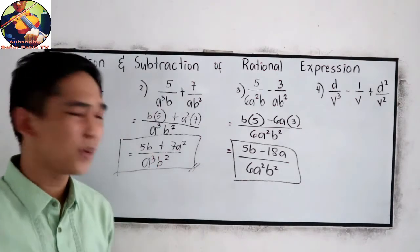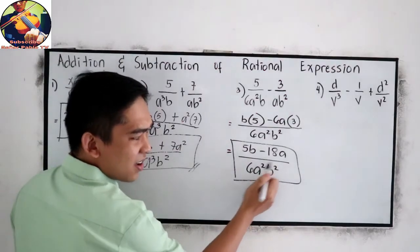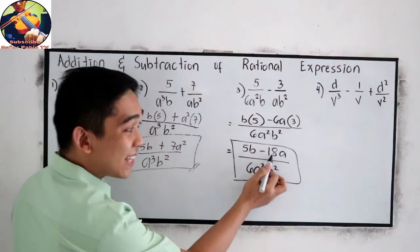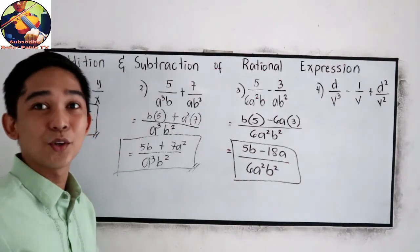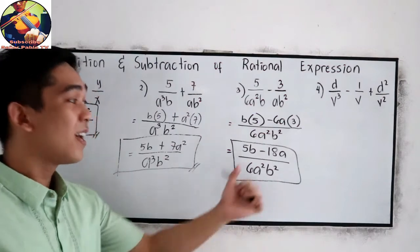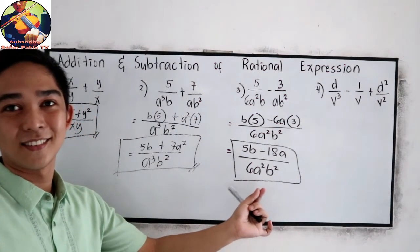Maybe some of you will ask, sir, can I cancel a and a? 18 and 6, because they are divisible by 3. Of course, you cannot cancel a binomial to a monomial.